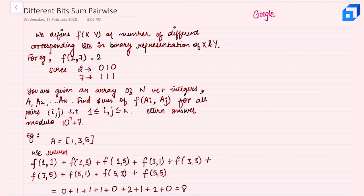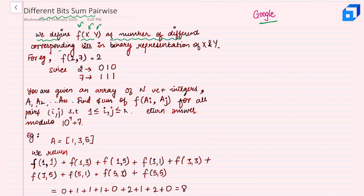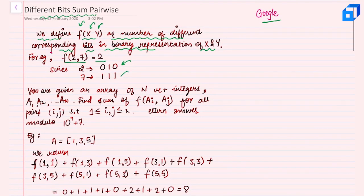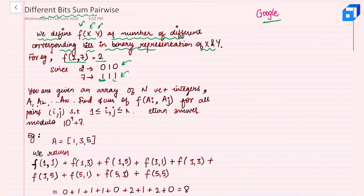In this video let's talk about a problem: 'Different Bits Sum Pairwise', also known as the Hamming Distance problem, which was asked in a Google interview. We define f(x, y) as the number of different corresponding bits in the binary representation of x and y. For example, f(2, 7) equals two, because 2 and 7 differ at two bit positions.